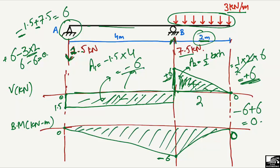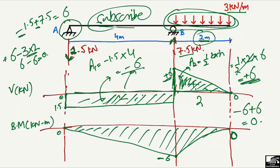This completes the shear force and bending moment diagram for this overhanging beam with a UDL only on the overhanging portion. Hope you guys understand how to find support reactions and draw the shear force and bending moment diagrams. Don't forget to subscribe for more civil engineering videos.